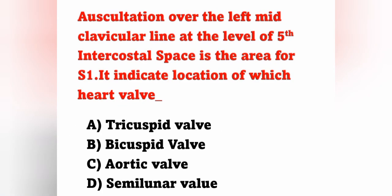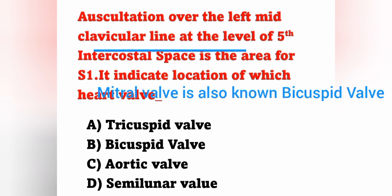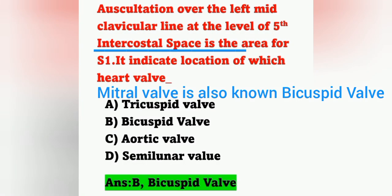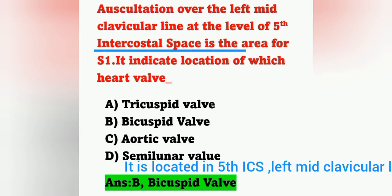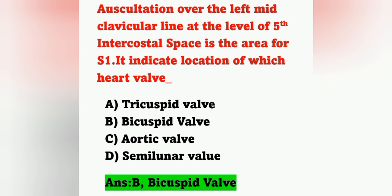Next question: auscultation over the left mid-clavicular line at the level of the fifth intercostal space is the area for S1 — it indicates the location of which heart valve? S1 heart sound occurs due to the closure of the bicuspid and tricuspid valves. The mitral valve is also known as the bicuspid valve. The bicuspid or mitral valve is located in the apical area, that is the left mid-clavicular line at the level of the fifth intercostal space.